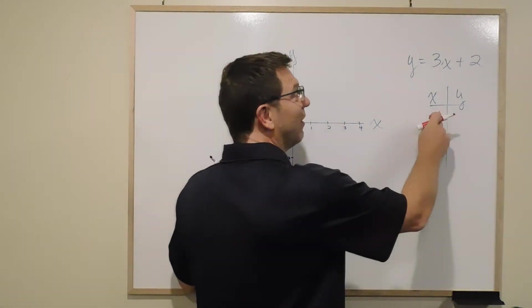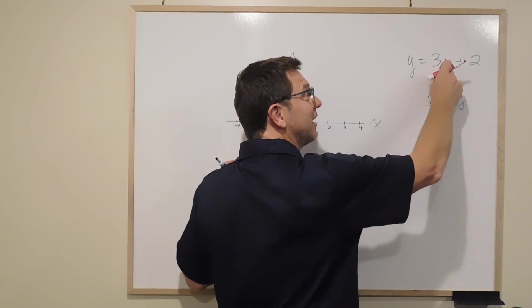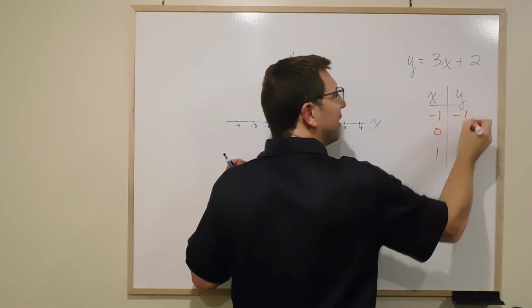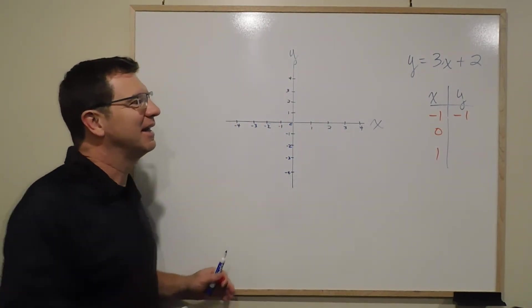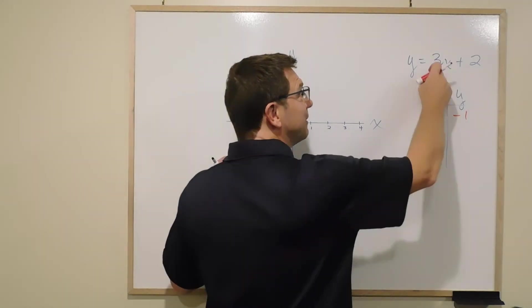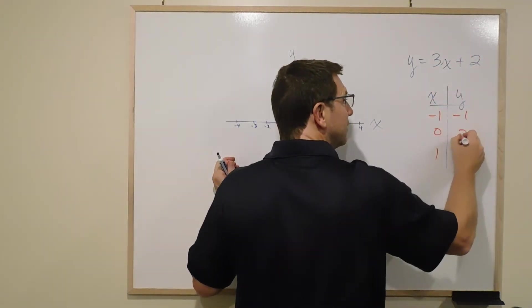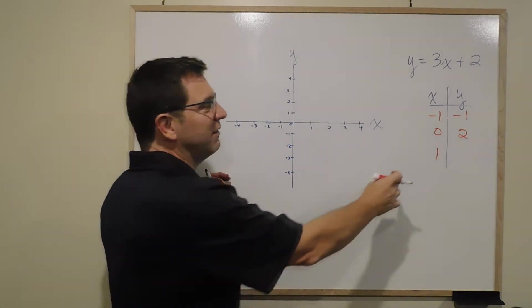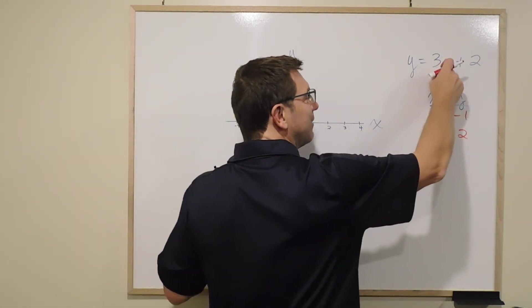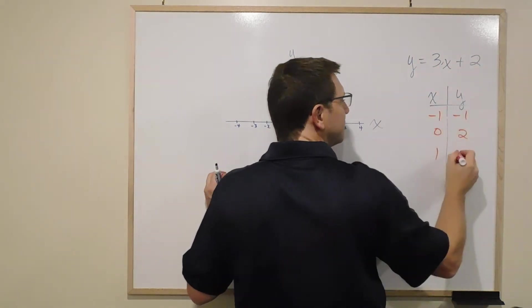If I pick negative 1 for x, I do 3 times negative 1, which is negative 3 plus 2, and I get negative 1 for y. That's a coincidence they're both negative 1. If I pick 0 for x, 3 times 0 is 0, and 0 plus 2 is 2. If I pick 1 for x, 3 times 1 is 3 plus 2 is 5.